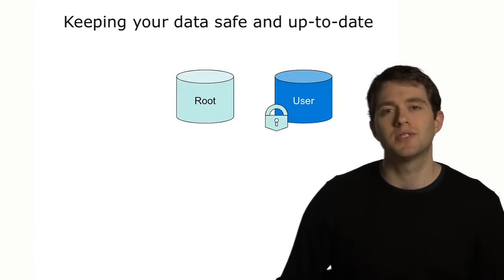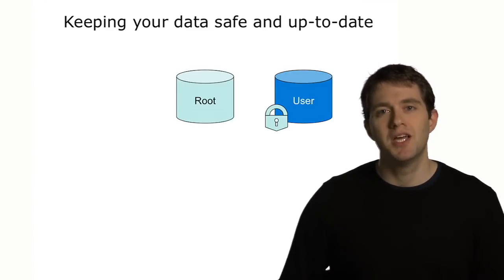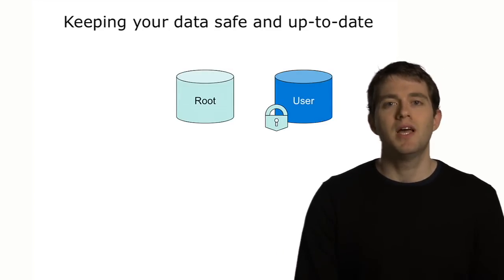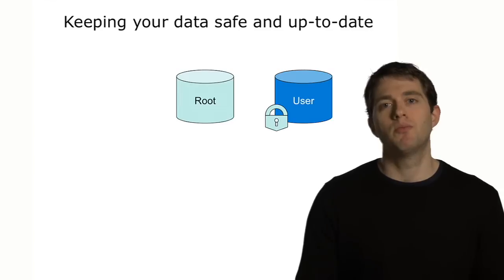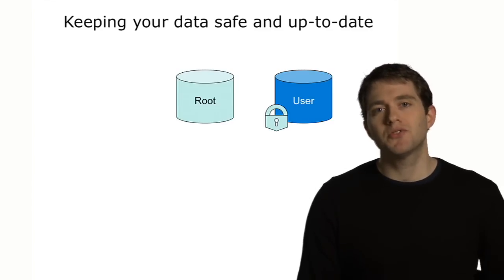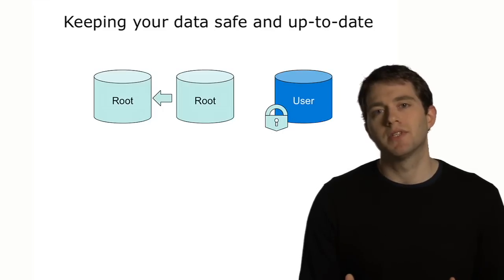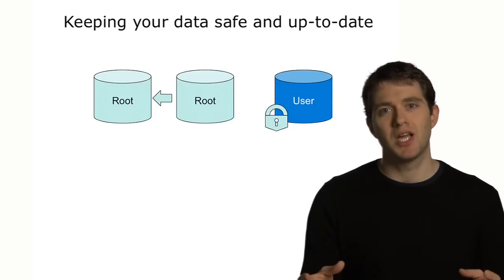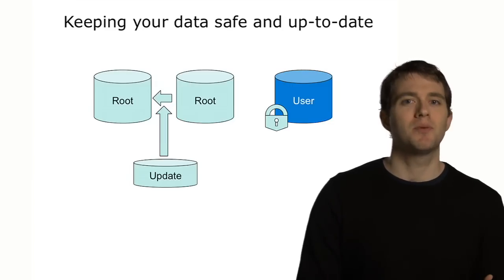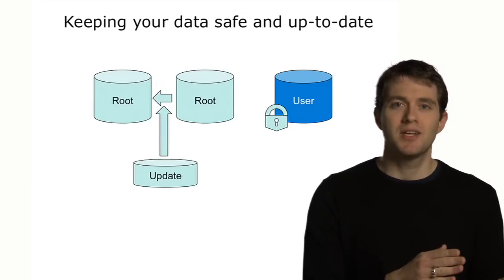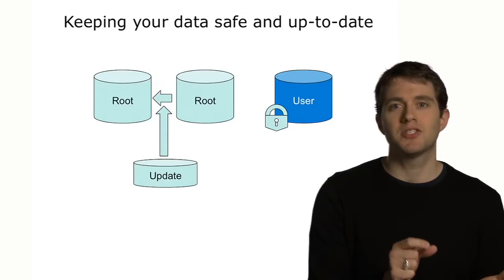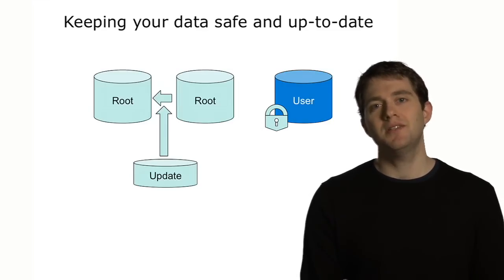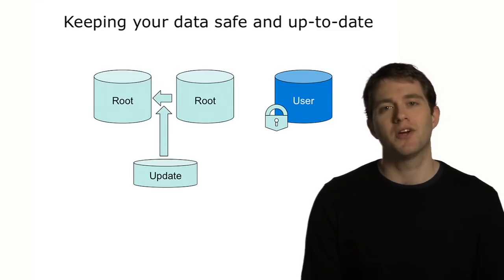That makes it really easy for us to do system updates. If we want to pull down some extra information, we can just pull it down, apply it, and then reboot, and you're good. What's interesting is that we use multiple partitions for this — we keep a system partition and a second system partition. When we download an update, we check to make sure that update is authentic, then we check what happened on the original partition, and just update the other partition. When everything's done, we flip the switch and you're ready to go.